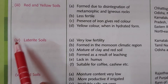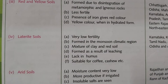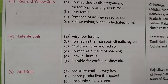Laterite soil has very low fertility. It is formed in monsoon climatic regions where there is more impact of monsoon, particularly in mountain areas. It is formed as a result of leaching — a mixture of clay and red soil. During heavy rains, the topsoil nutrients are washed away downward through the process of leaching.